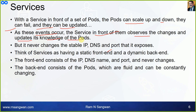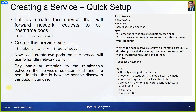The service never changes its stable IP address, DNS, and port that it exposes. Think of a service as having a static front-end and a dynamic back-end. The front-end consists of the IP, DNS name, and port — and that never changes. The back-end consists of the pods, which are fluid and can constantly be changing. Now let's create a service that will forward network requests to our hostname pods.